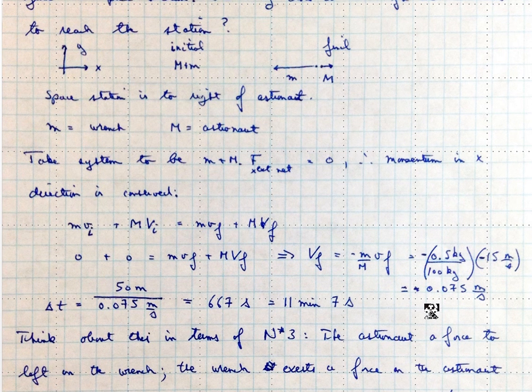And so that gives the astronaut a velocity after the collision of plus 0.075 meters per second. And so again, I have two minus signs here, which reconcile into plus.